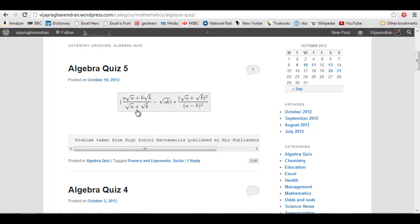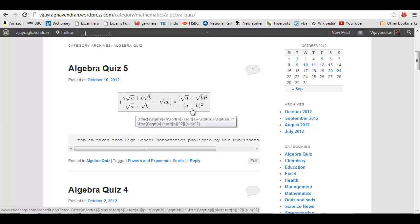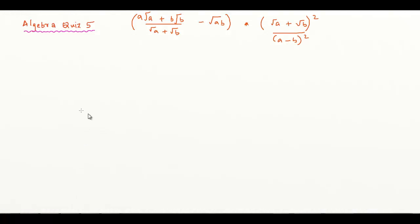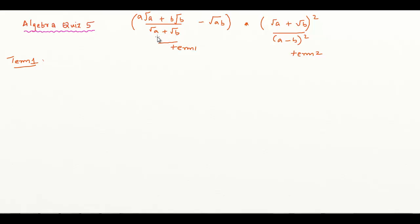I'm going to take it term by term. I'll name this as Term 1 and this as Term 2. In the denominator of Term 1, I've got an irrational number, so the first thing I'm going to do is rationalize the denominator.